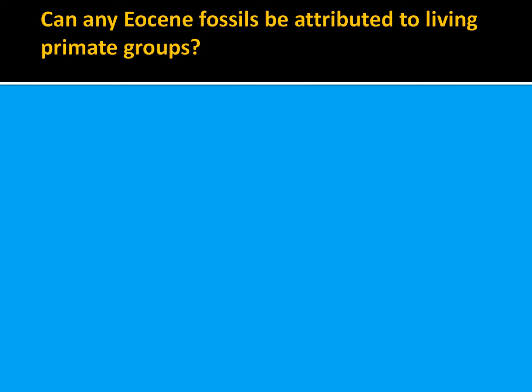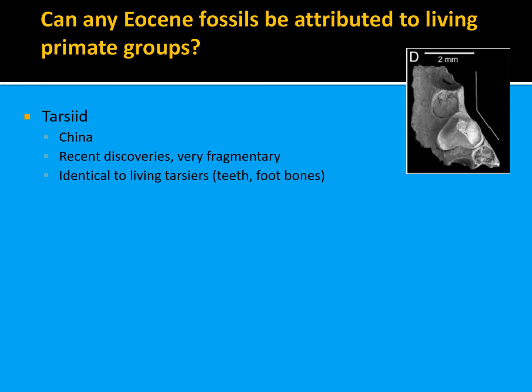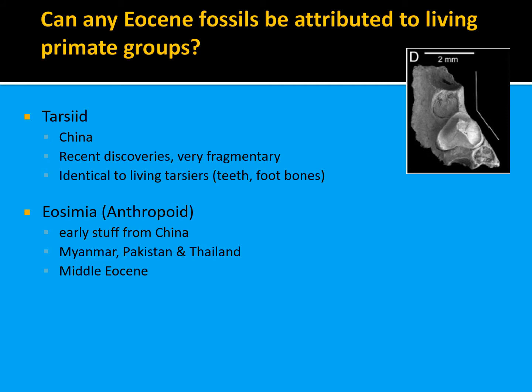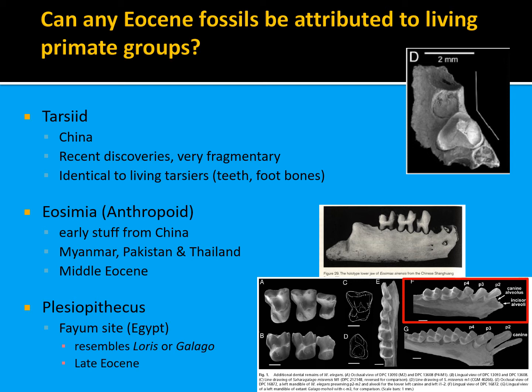Can any Eocene fossils be attributed to living primate groups? We do have some Eocene-era fossils that are nearly identical to some primates we see today. We have a tarsid fossil from China — very fragmentary but identical to living tarsiers in teeth and foot bones. We have Eosimias — the anthropoid from China, Myanmar, Pakistan, and Thailand from the Middle Eocene. And we have Plesiopithecus from the Fayum site, very similar to what we see in lorises and galagos from the later Eocene. So there are some connections between modern primates and these fossils.